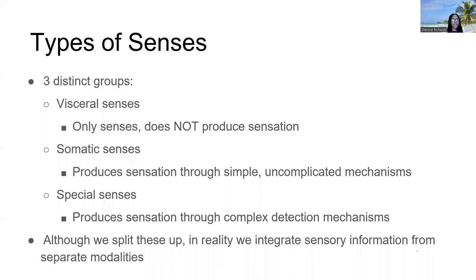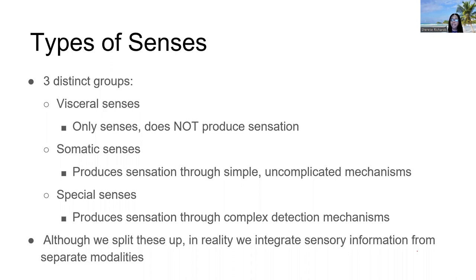In terms of our senses, there are three distinct groups. Visceral senses are only detection of stimuli and don't involve any sensation. Somatic senses produce sensations through uncomplicated mechanisms — think proprioception, touch, and temperature. Special senses produce sensation through much more complex mechanisms — not as simple as perceiving temperature or touch, but a much more complex series of reactions that brings about that sensation.